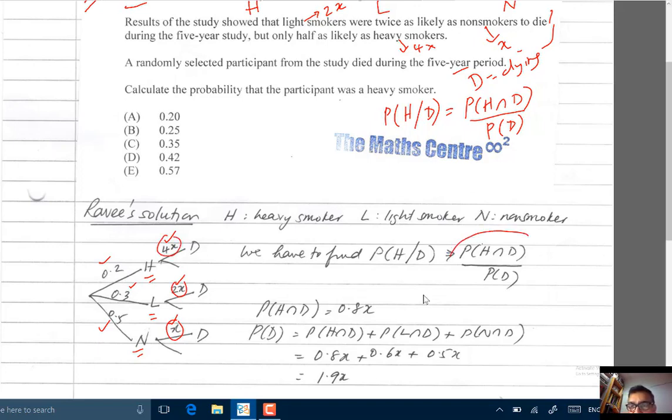Now remember, we want to find this. So we need the numerator and the denominator. The numerator, H and D, is easy. Just go along the branch. It'll be 0.2 times 4X. You will get 0.8X.